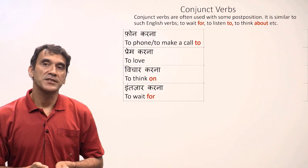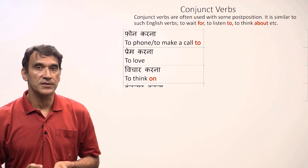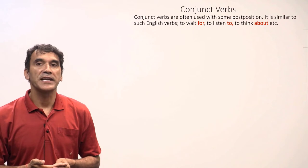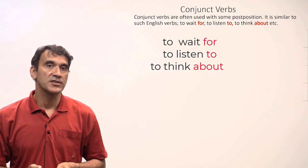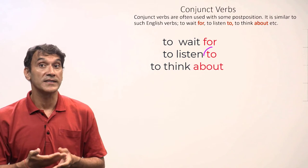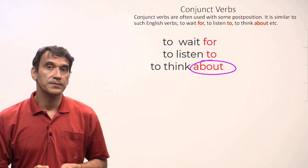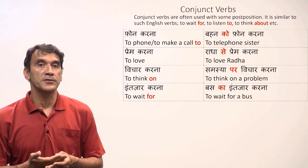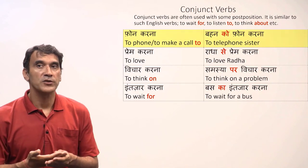Many conjunct verbs — usually the ones with a noun and verb — go with postpositions. This is similar to some English verbs that go with specific prepositions, such as 'to wait for', 'to listen to', 'to think about'. The conjunct verbs should be memorized with their postpositions. Here are a few examples.